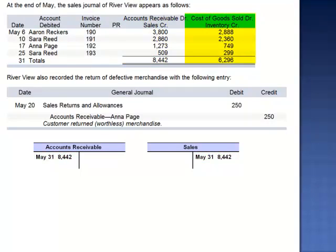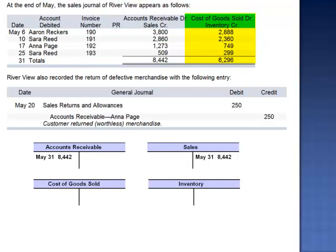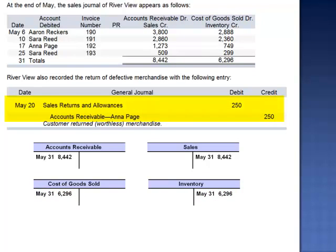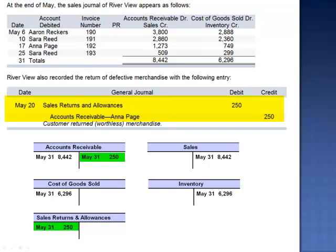The sales journal also records the cost of goods sold. The journal entry at the end of the month is a debit to cost of goods sold, the inventory expense account, and a credit to inventory. The general journal also records a debit to sales returns and allowances for $250 and a credit to accounts receivable.